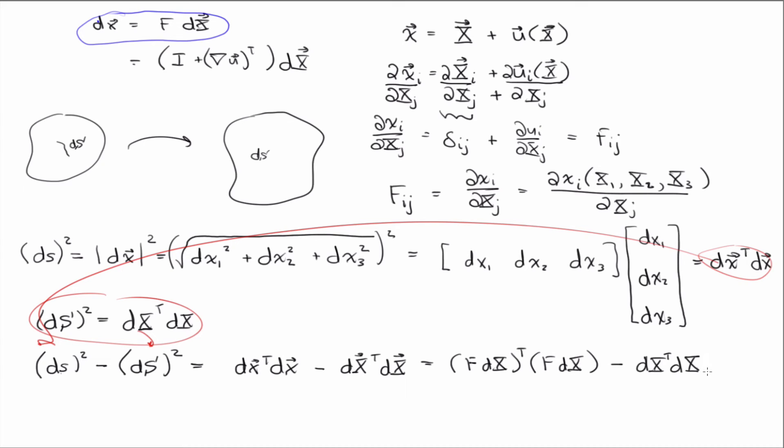Now if you have a matrix vector product that's, the product is transposed, how do I, do you know what that's equal to? Yeah, it's equivalent to saying I can distribute the transpose and flip the order. So I'm going to distribute the transpose and flip the order. So I have d X transpose F transpose F d X minus.